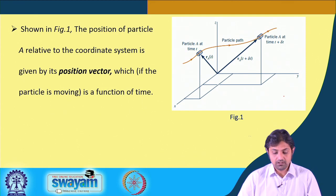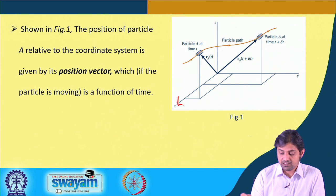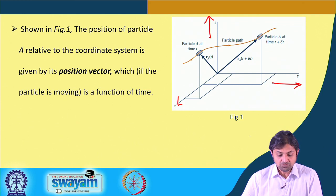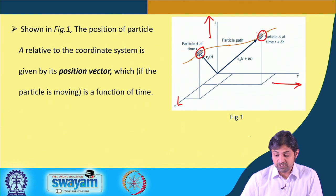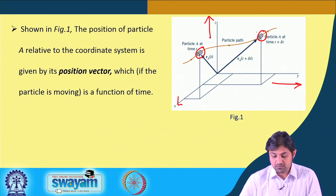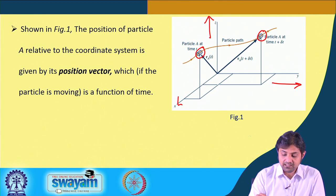Looking at the figure, the x-axis is in one direction, y-axis in another, and z-axis in another. Particle A is shown at two different times — at time t and at time t + Δt — and the red line represents the particle path.